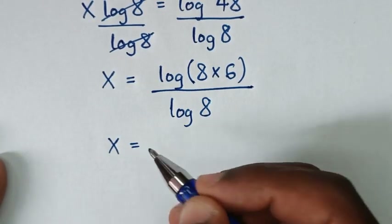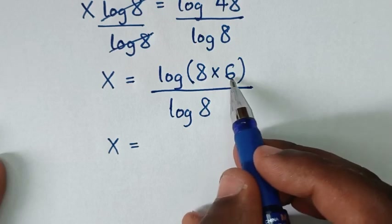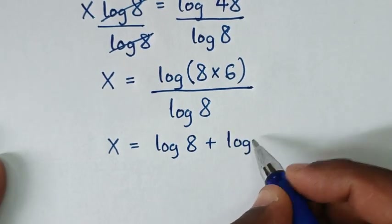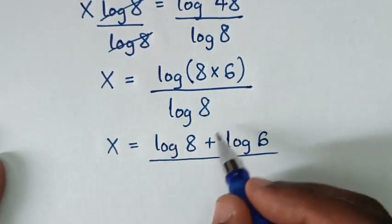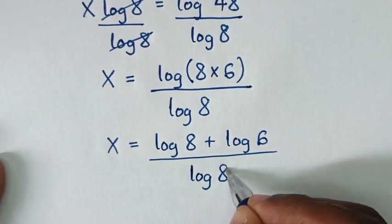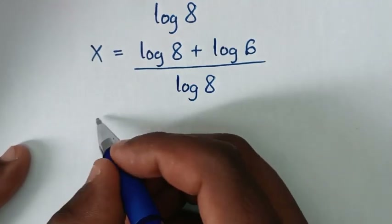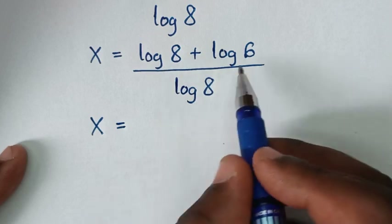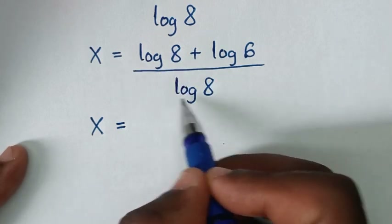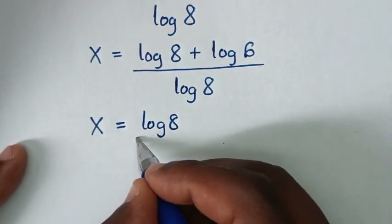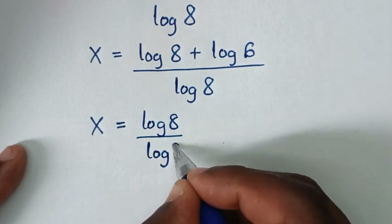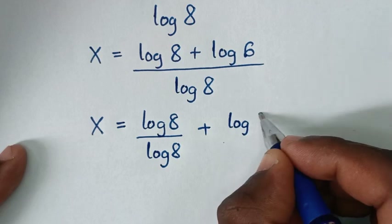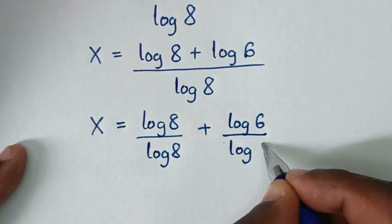In the next step, x is equal to log of 8 times 6, which is the same as log of 8 plus log of 6, all over log of 8. In the next step, we'll divide log of 8 into each part: log of 8 over log of 8, then plus log of 6 over log of 8.